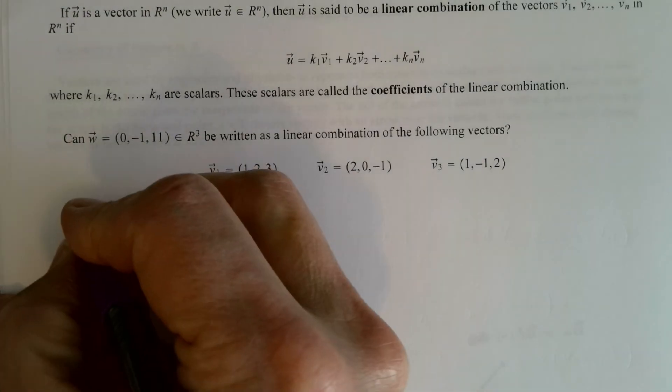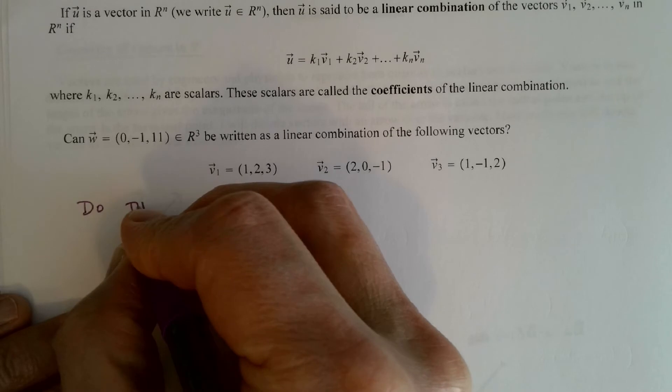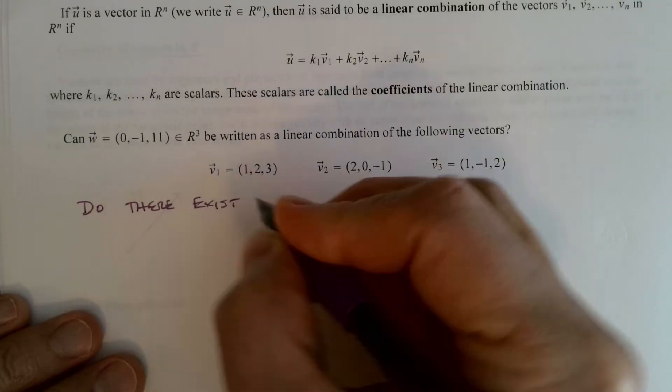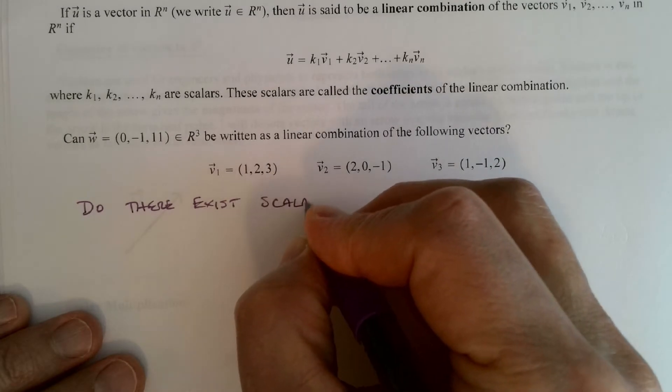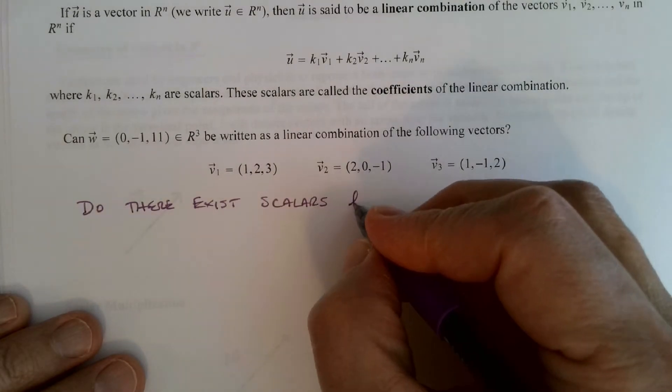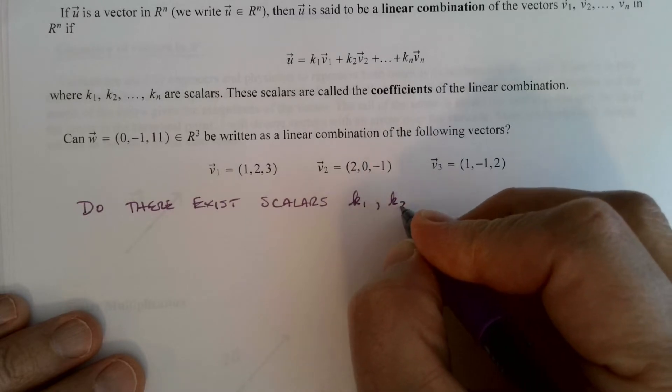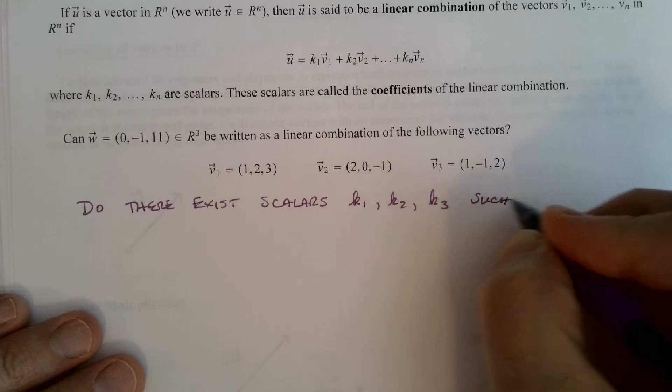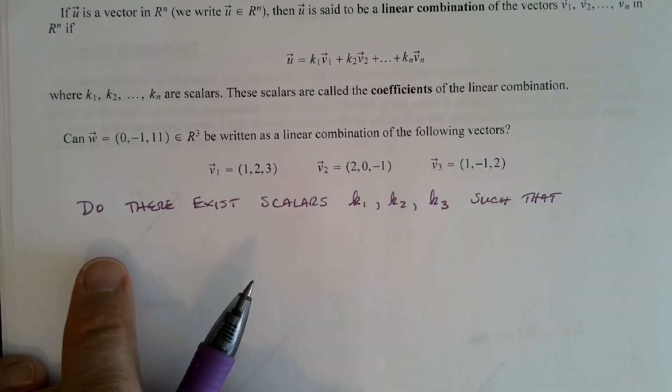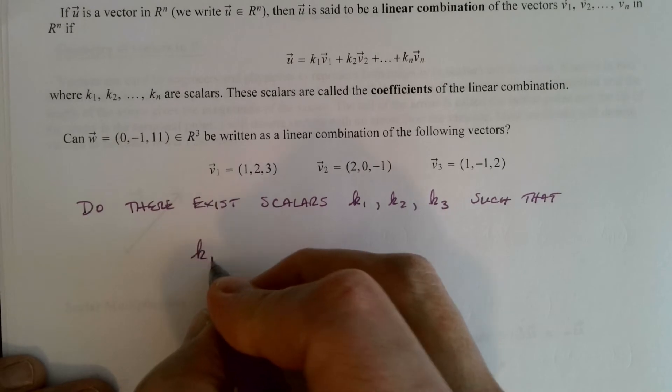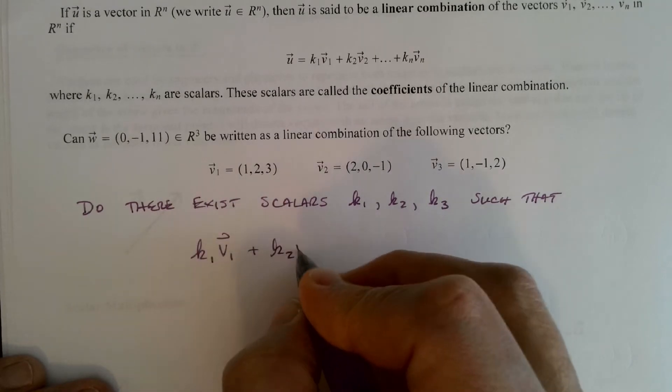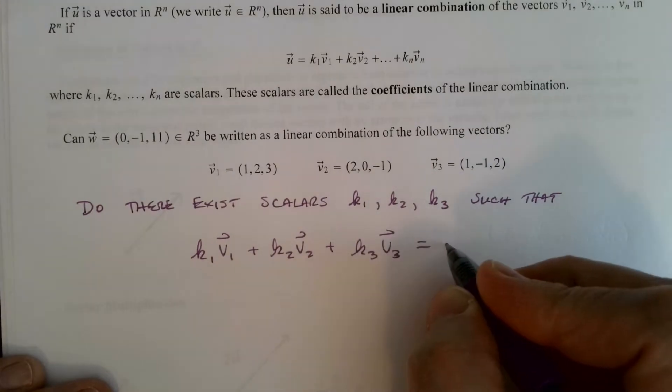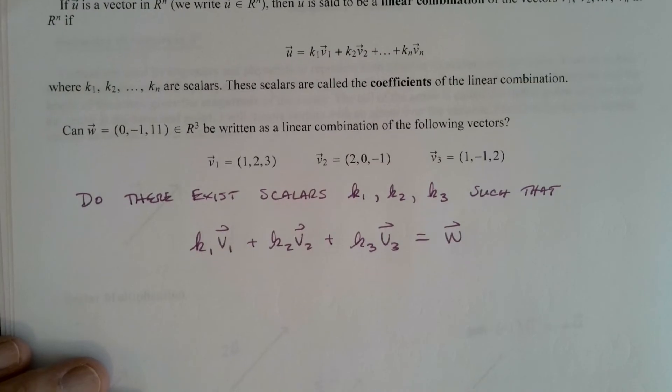So let's see. The question is really asking then, do there exist scalars? And I'm going to call these scalars k1, k2, and k3 such that k1 v1 plus k2 v2 plus k3 v3 equals w. That's really what we're asking.